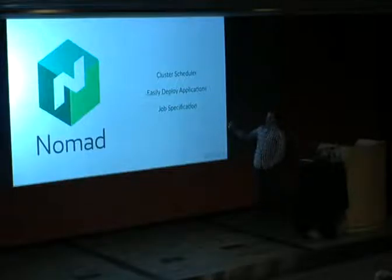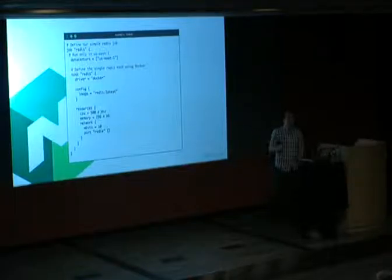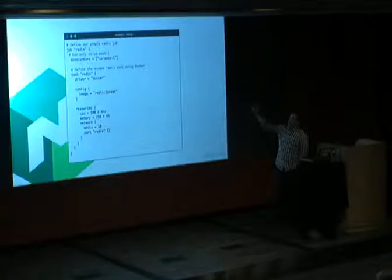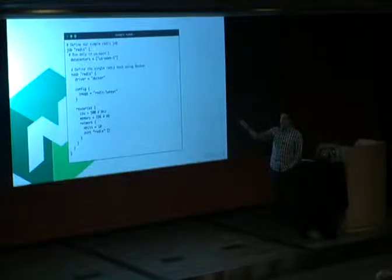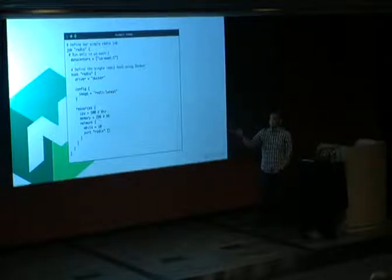Nomad is a cluster scheduler whose whole point is to easily deploy applications. To enable that, Nomad defines a job specification. Here's a valid example — the syntax will look familiar if you've used our other tools. This job is named 'redis', it runs in the us-east data center, has one task also called 'redis', runs using the Docker driver with the Redis image.